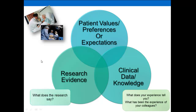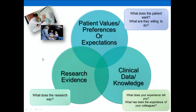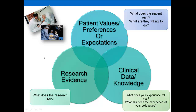The second part is the research evidence — what does the research say is the best thing to do here? And lastly, there are the patient's values, preferences, or expectations. As you know, no care can be carried forward unless a patient is willing or wants to go along with it. All three of these things come together to give us an optimal decision.